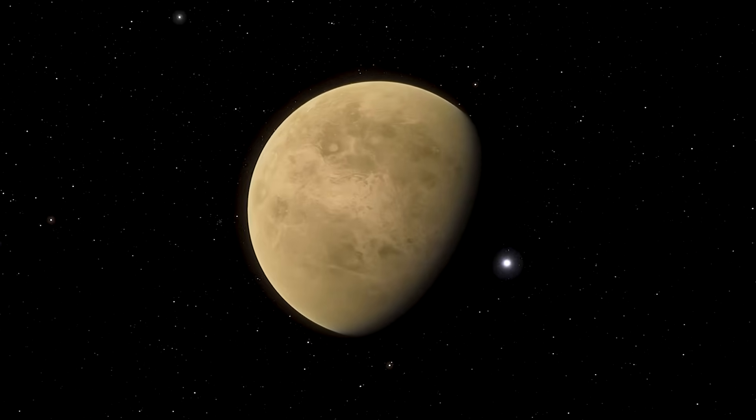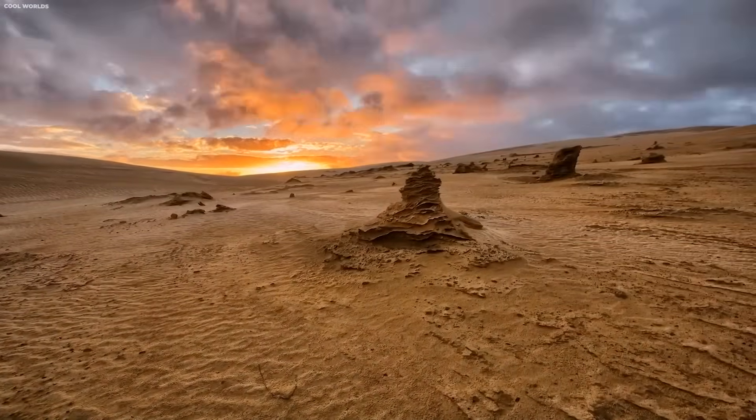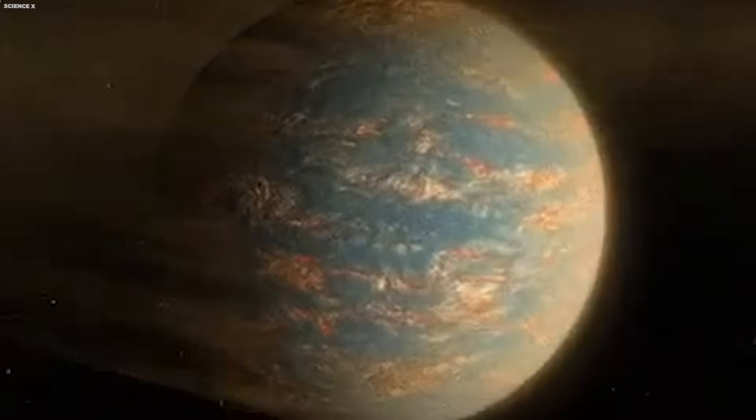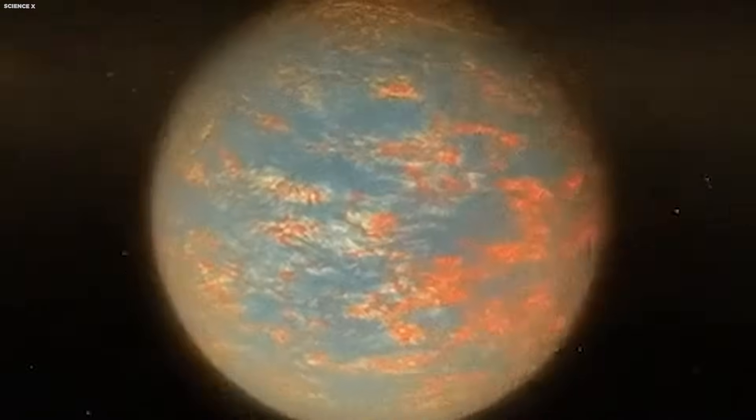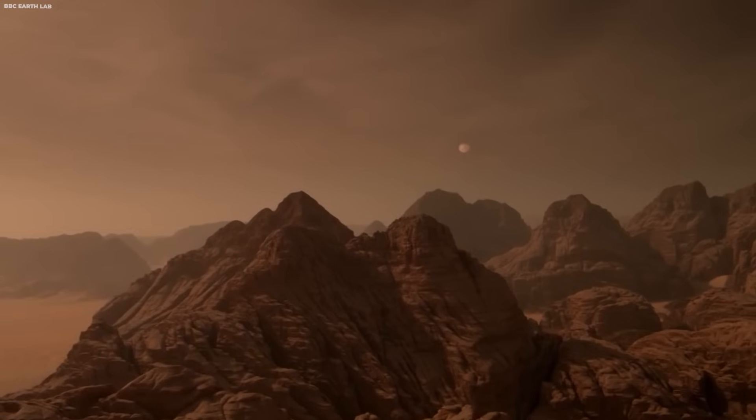These models, however, hinged on the existence of water on the planet, which is questionable. Scientists believe that Venus was not habitable regardless of the presence or absence of water. Venus reached what is known as a runaway greenhouse phase, marking a significant departure from Earth's climate.